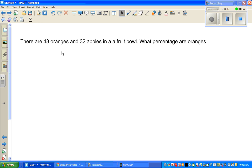There are 48 oranges and 32 apples in a fruit bowl. What percentage are oranges? So you've got 48 oranges and you've got 32 apples. So let me first find the total number of fruits. So the fruits is, this is 48 plus 2 is 50 plus 30 is 80. So you've got 80 fruit.